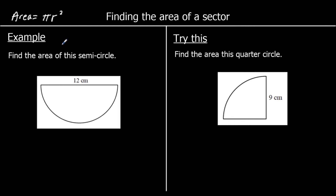In this first example, we have a semicircle with a diameter of 12 centimeters. If the diameter is 12 centimeters, a radius is half of a diameter, so the radius must be half of 12, so 6 centimeters.